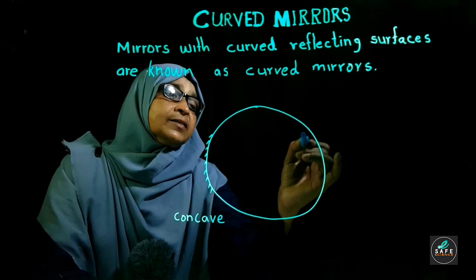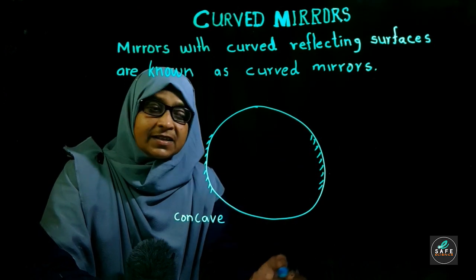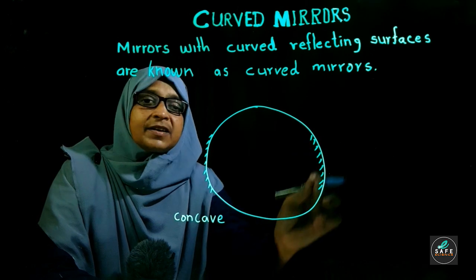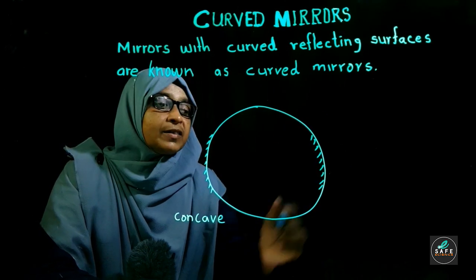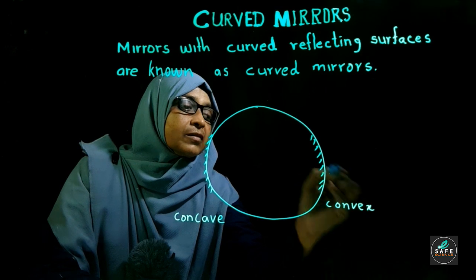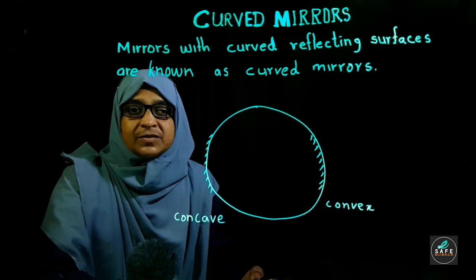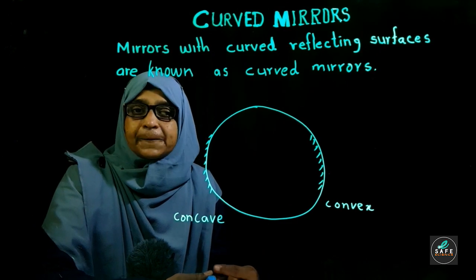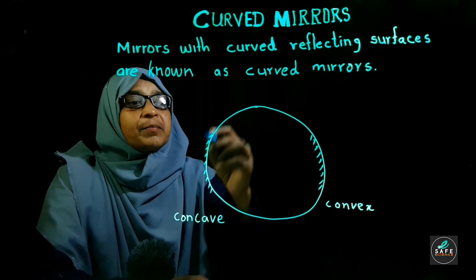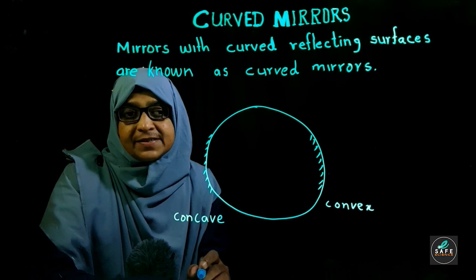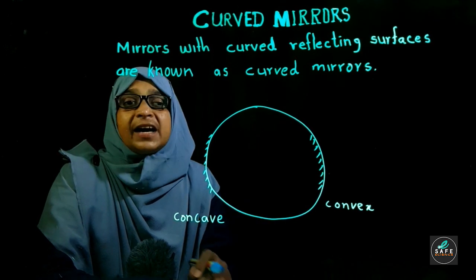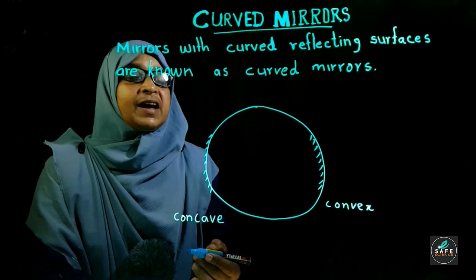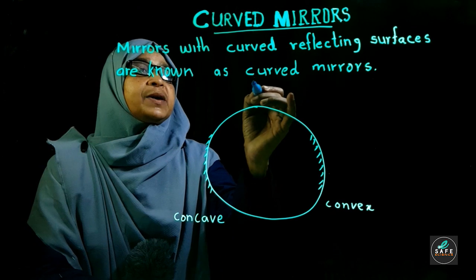Here the reflecting surface is convex, so this is a convex mirror. There are two types of curved mirrors, and since these curved mirrors are parts of spheres, they can be called spherical mirrors.